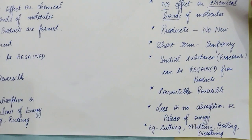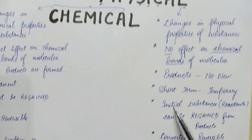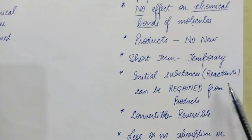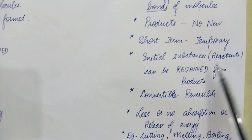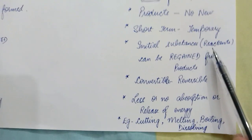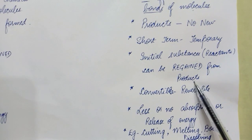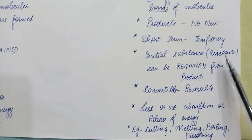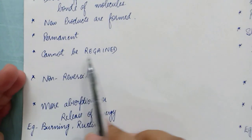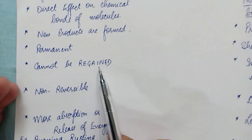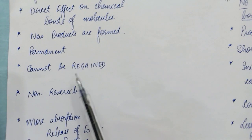The next difference is from the alphabet I in 'physical.' I stands for initial substances, which are known as reactants — they can be regained from products. For example, if I convert water into ice: water is the reactant, ice is the product. If I melt the ice again, I can get the water back. On the other hand, in chemical changes, reactants cannot be regained — once reacted and a new product is formed, the reactants cannot be recovered.